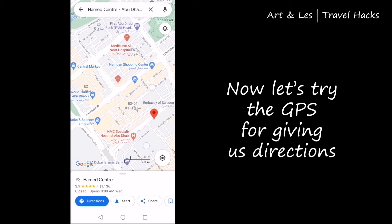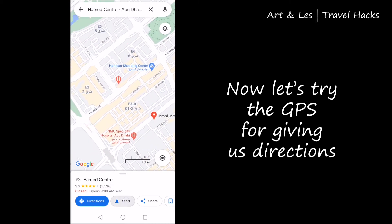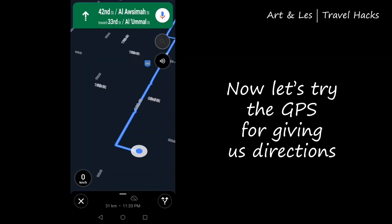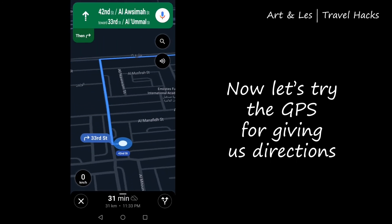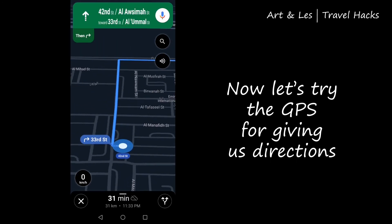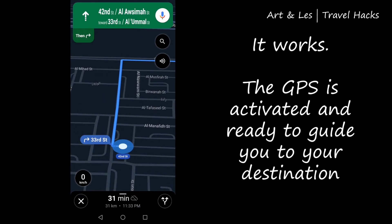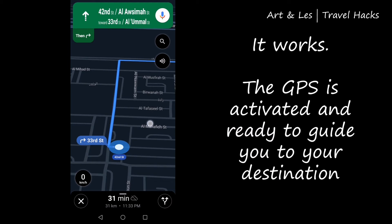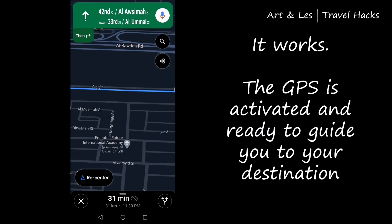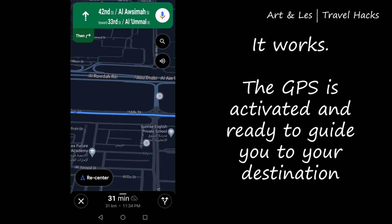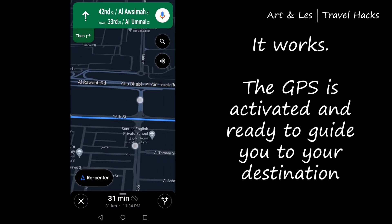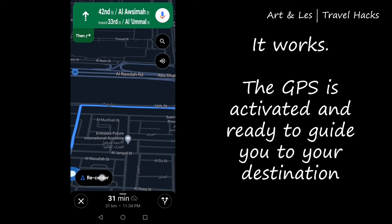Now let's try the GPS for giving us directions, and it works — the GPS is activated and ready to guide you to your destination. Take note the Wi-Fi is still off.